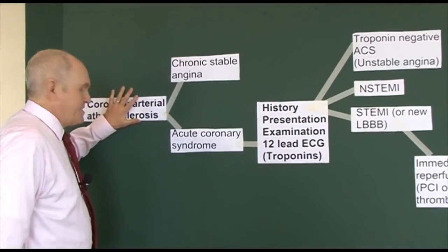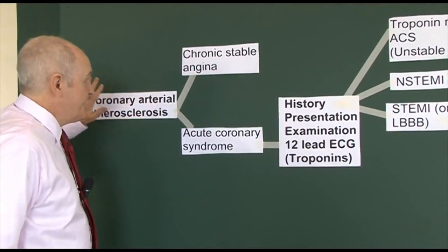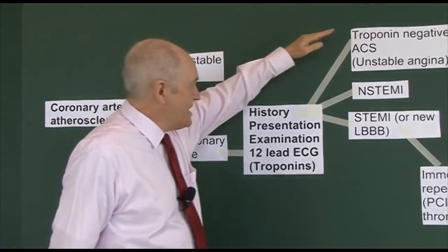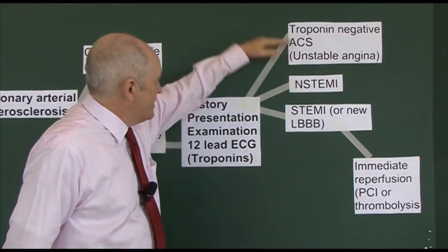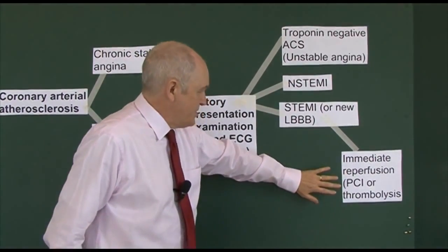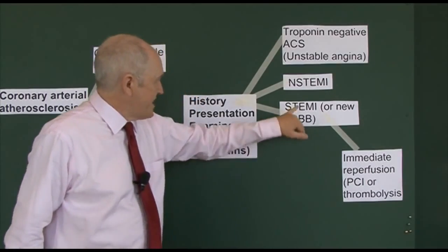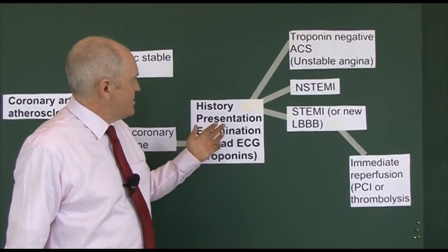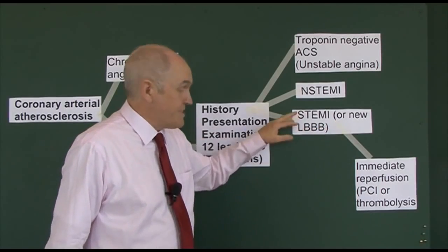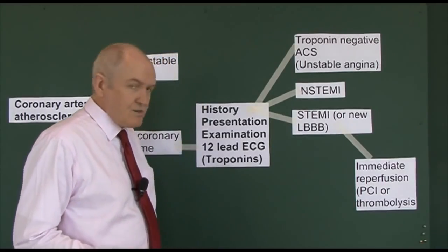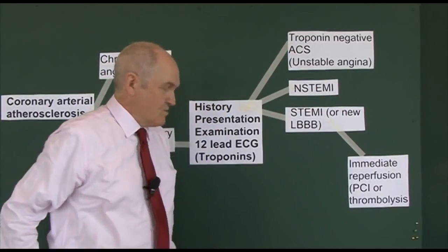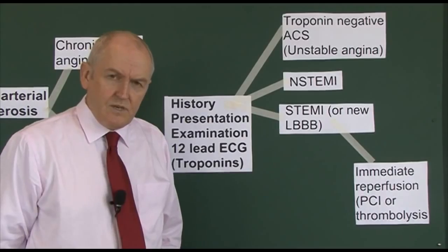The problem is coronary arterial atherosclerosis - this is the bad guy. We have the chronic presentation of stable angina, the acute presentation of the spectrum of severity that is acute coronary syndrome, and we manage it with the acute coronary syndrome approach or immediate reperfusion with PCI or thrombolysis if dealing with a STEMI or clinical features with new left bundle branch block. Time is of the essence - the saying in coronary care is 'time is muscle'. We need to get these coronary arteries reperfused as quickly as possible.